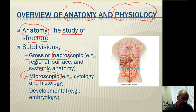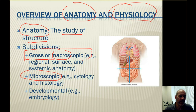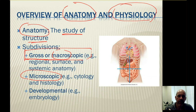Gross or macroscopic anatomy refers to anatomical parts that you can see with the naked eye — gross doesn't mean nasty or gory here, it just means macroscopic. Things like the heart and the lungs, or the different divisions of those organs, would be part of gross anatomy.